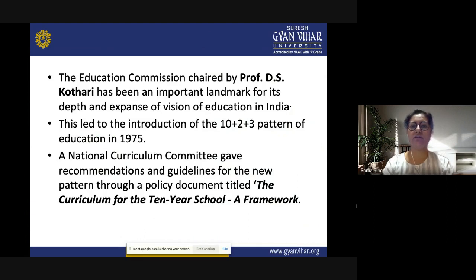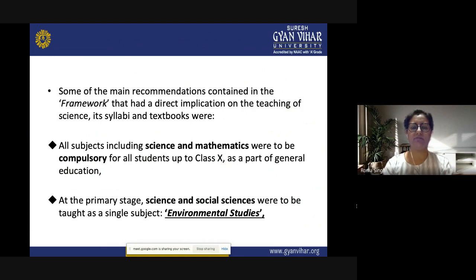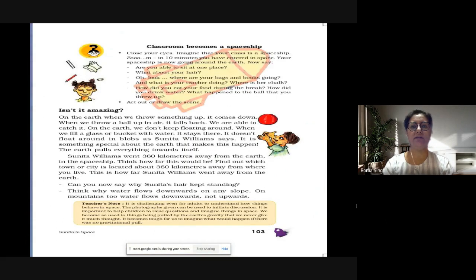The Education Commission chaired by Professor D.S. Kothari in 1964 was an important landmark for its expansive vision of education in India. This led to the introduction of the 10+2+3 pattern of education in 1975. The National Curriculum Committee gave recommendations through a policy document titled 'The Curriculum for the Ten-Year School: A Framework.' Key recommendations included: all subjects including science and mathematics were to be compulsory for all students up to class 10, and at the primary stage, science and social science were to be taught as a single subject, later renamed Environmental Studies.